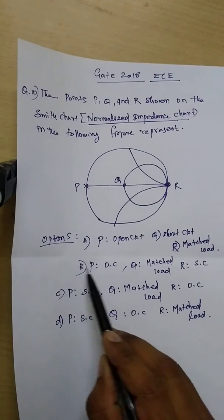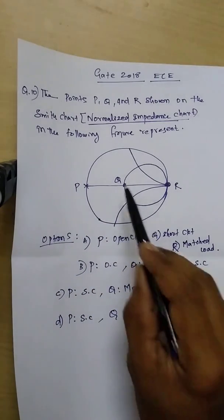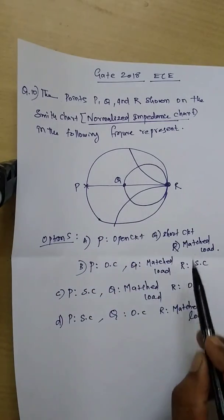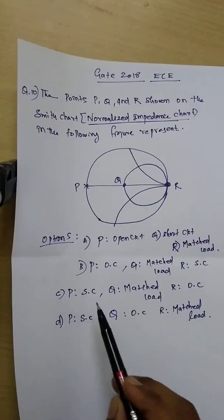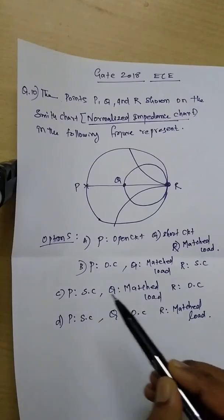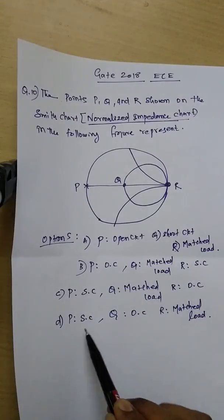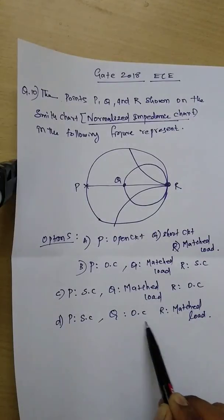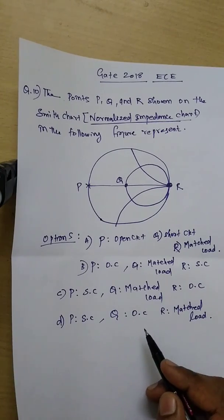Option B: P is open circuit, Q is matched load, R is short circuit. Option C: P is short circuit, Q is matched load, R is open circuit. Option D: P is short circuit, Q is open circuit, R is matched load. These are the four options.